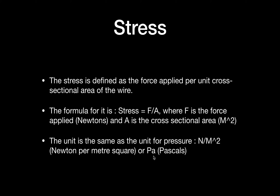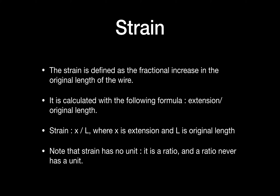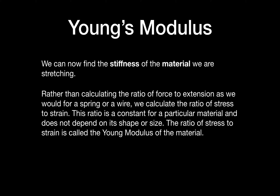Strain is defined as the fractional increase in the original length of the wire. For example, if the original length is 10 cm and the extension is 2 cm, strain equals extension over original length: 2/10 = 0.2. The formula is x over l. Note that strain has no unit, since both x and l are lengths and the units cancel. Strain is a ratio, and ratios never have units.